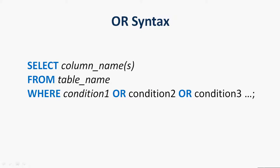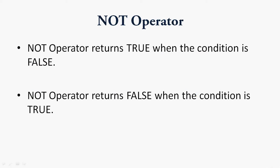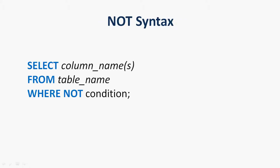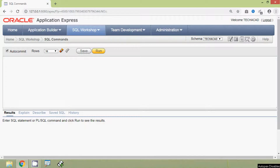The NOT operator returns true when the condition is false and returns false when the condition is true. The syntax for the NOT operator is: SELECT column names FROM table name WHERE NOT condition. We will now see some examples for these logical operators AND, OR, and NOT so that it will be more clear.